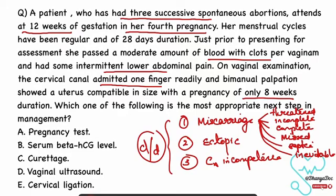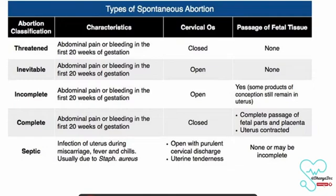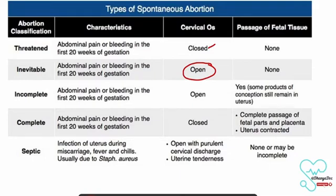We need to make a correct clinical diagnosis from these differentials. Let me give you an overall idea about miscarriages. In threatened abortion, the cervix is closed and there is no passage of fetal tissue, so the uterine size corresponds to the period of gestation. In inevitable abortion, the cervix is open — the pregnancy loss is inevitable and about to occur, the complete product of conception still remains in the uterine cavity, and the uterine size corresponds to the period of gestation. In incomplete abortion, the cervix is open and there is passage of products of conception, but some products are still in the uterus.